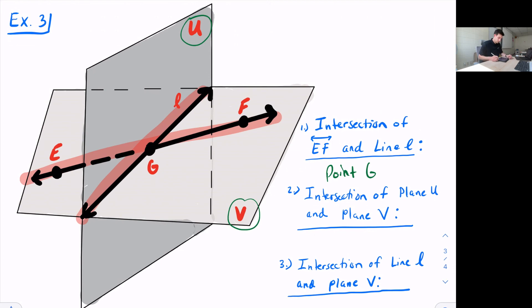Question two, the intersection of plane U and plane V. Plane U is our darker gray plane. Plane V is our lighter gray plane. Two planes intersect at a line. They intersect at line L.